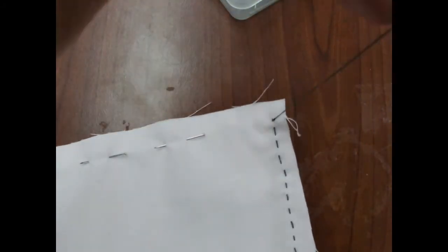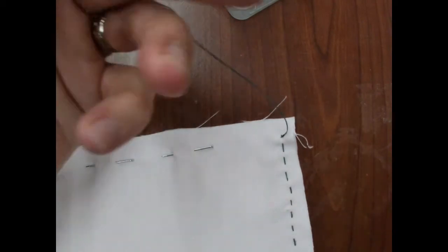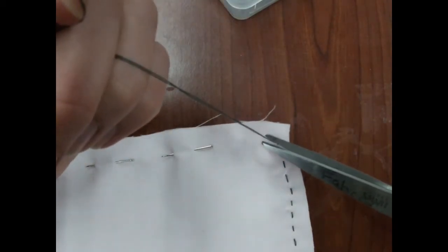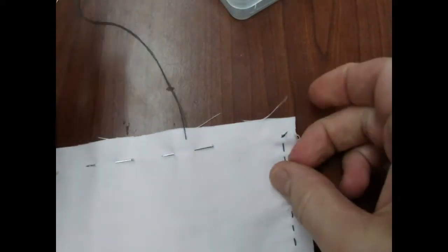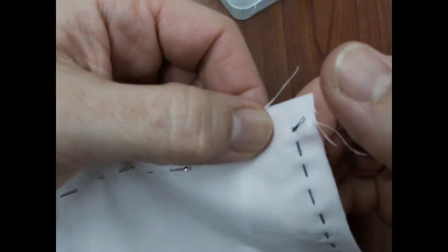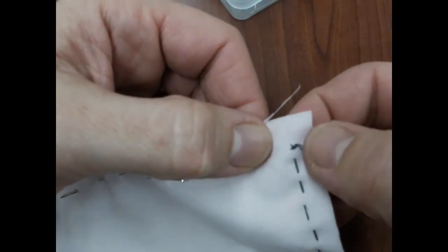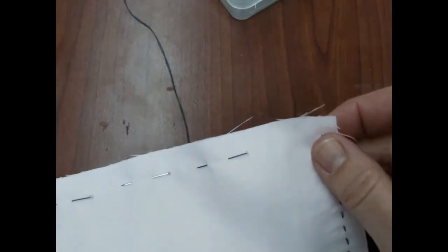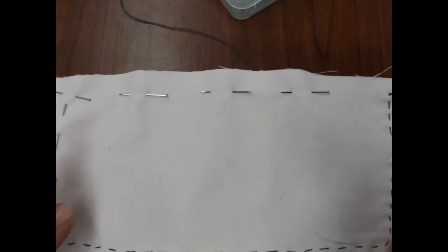Now you'll trim your thread. Trim it near the knot, but not at the knot. Having that little bit extra thread for a tail there will help ensure that nothing will unravel. And that is that.